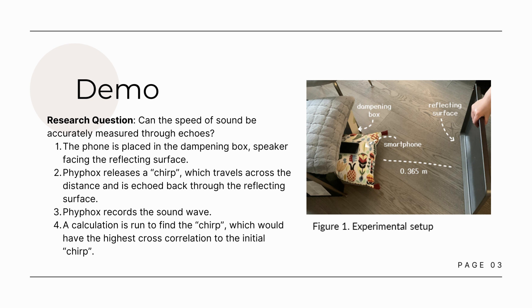The set of procedures followed in this experiment began with the phone being placed in the dampening box, as shown in Figure 1, consisting of multiple pillows and boxes layered with tissue paper. Care was taken to make sure that the phone speaker was facing the surface in order to have optimal results.